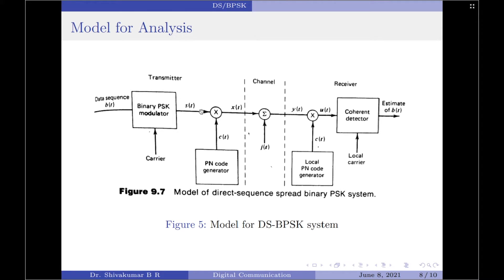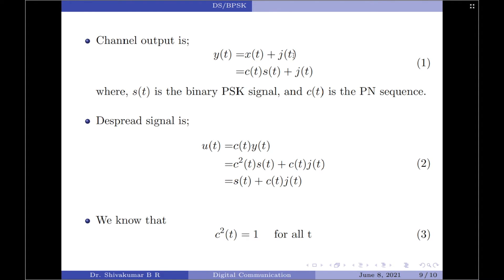Let us analyze this from a mathematical perspective. Here, S(t) is the binary PSK signal, C(t) is the PN sequence, and X(t) is the DSBPSK signal. In the channel, we have an added interference component represented by J(t). Therefore, the channel output Y(t) is given by X(t) plus J(t). But since X(t) is nothing but S(t) multiplied by C(t), we replace it accordingly. So S(t) stands for the binary PSK signal and C(t) is the PN sequence.